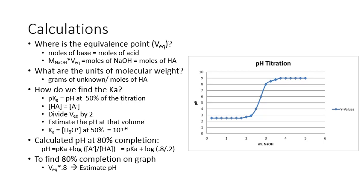We can calculate molecular weight because we know the moles of our weak acid and the grams of weak acid that we weighed out at the beginning. Knowing the grams and calculating the moles from the equivalence point, we can determine molecular weight.